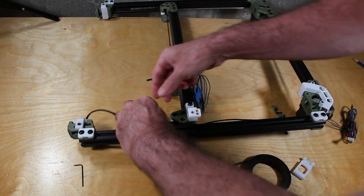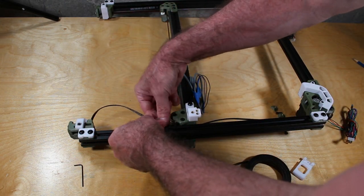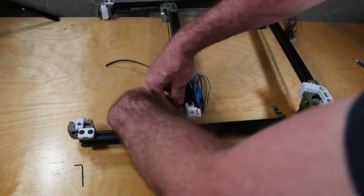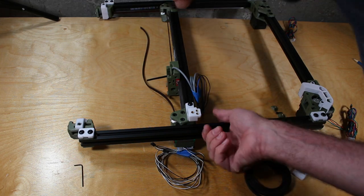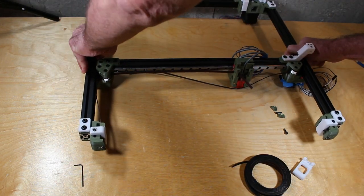And it's not easy to see in the video. But the belt teeth should be facing toward the carriage, away from this rail right here.